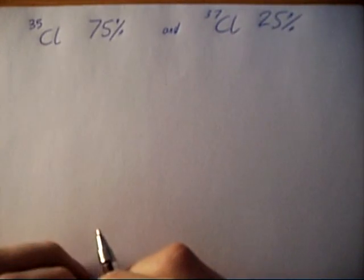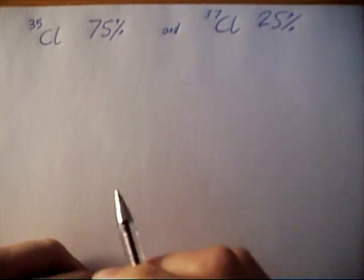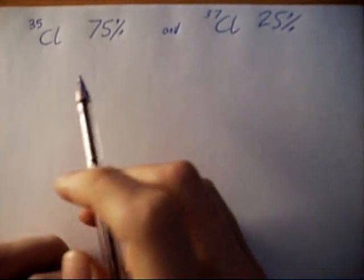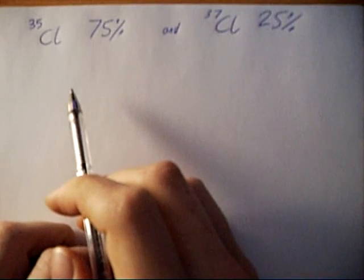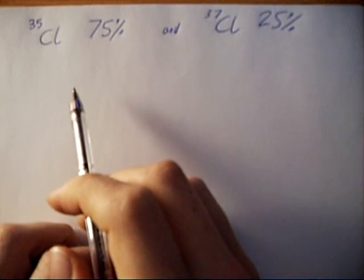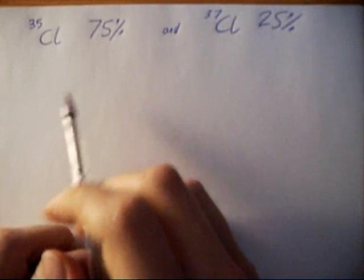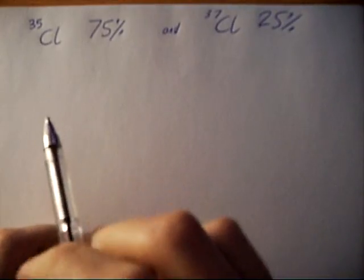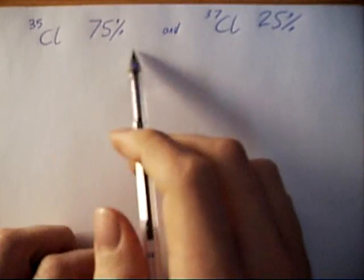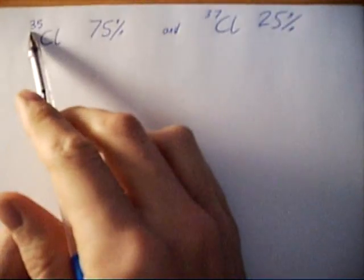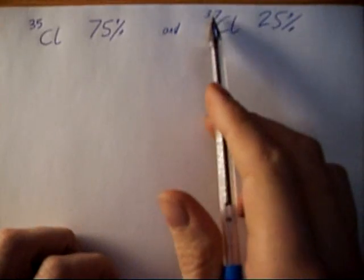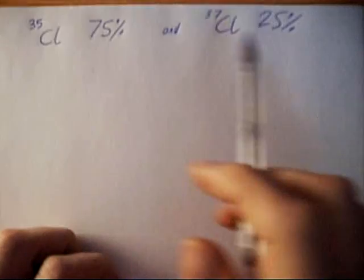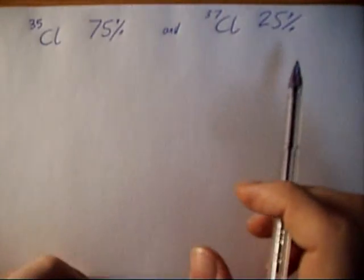To calculate the relative atomic mass, you need to multiply each mass by its percentage abundance and then divide this total by 100. Chlorine has two isotopes, chlorine-35 and chlorine-37, in these two abundances.